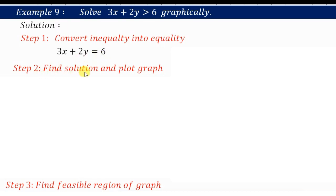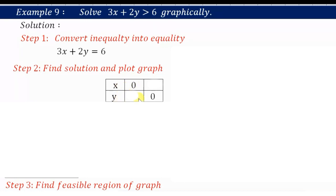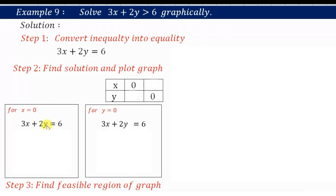Step 2: find solutions and plot the graph. We need to find the values of x and y. For x equals 0, we find y, and for y equals 0, we find x. Putting x equals 0 into the equation, this term becomes 0 and 2y equals 6, so y equals 3. For x equals 0, y equals 3.